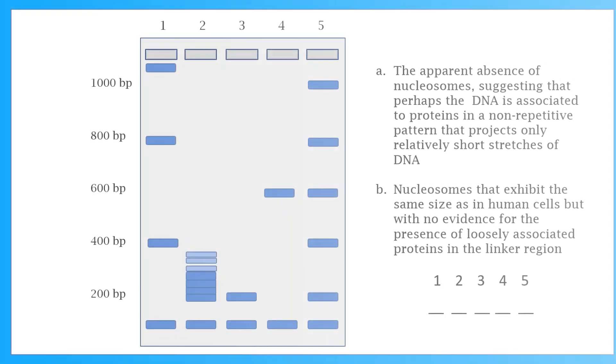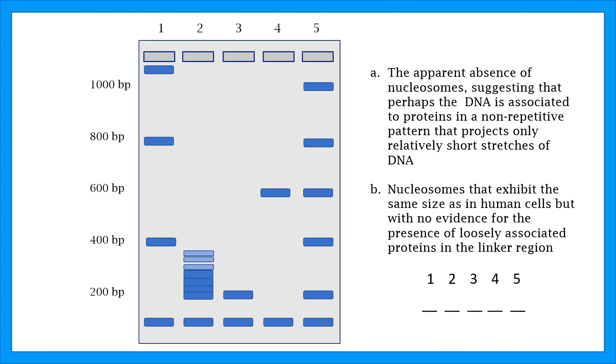The actual agarose gel from the question is shown here with two of the answer choices. Let's dive right in with option A. The apparent absence of nucleosomes, suggesting that perhaps the DNA is associated to proteins in a non-repetitive pattern that projects only relatively short stretches of DNA. This means we have to look for short segments of DNA and no significant separation of DNA fragments. With this information, we can see that row 2 is the correct one.